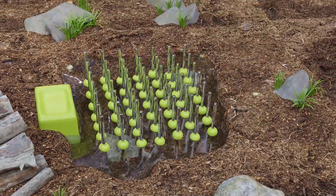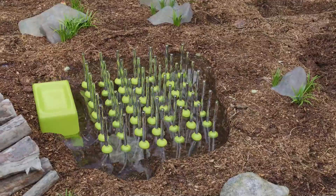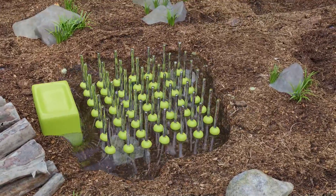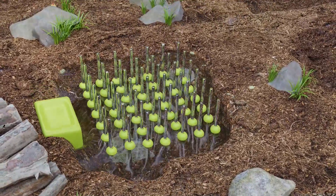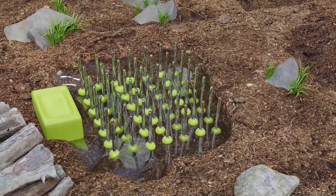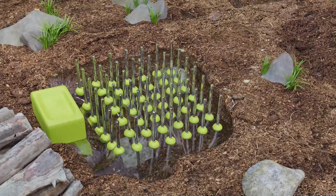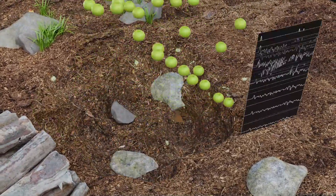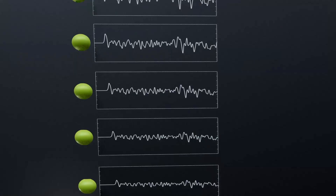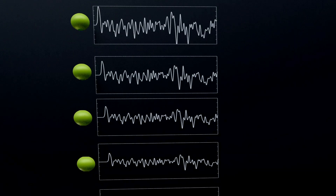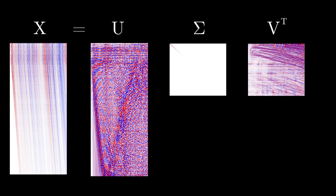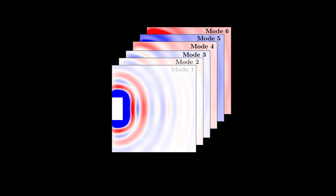So in this toy example, we're going to use all of these float sensors as a source of data to understand the spectral POD and what it's able to give us. Each one of these floats has now its own time series of heights. We can aggregate this time series into a matrix X and perform regular POD on it immediately, and that would be quite insightful already.